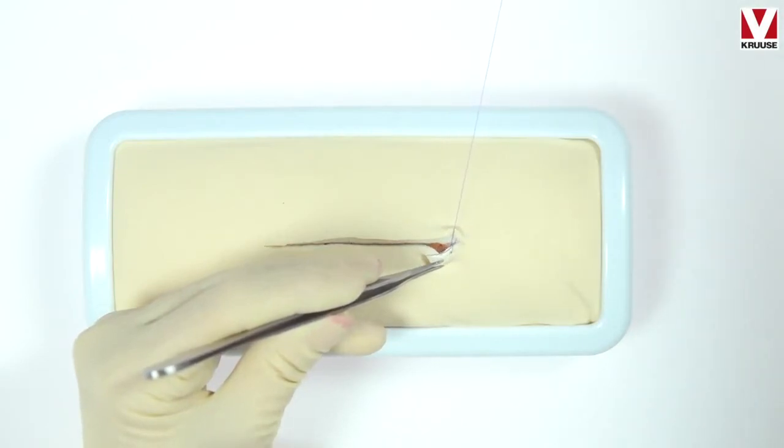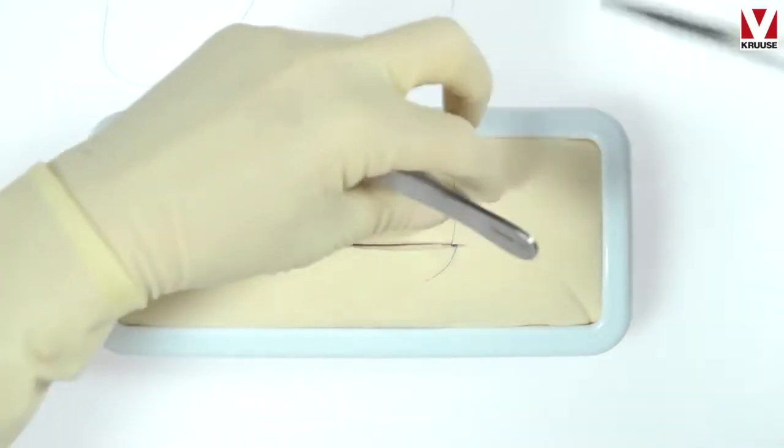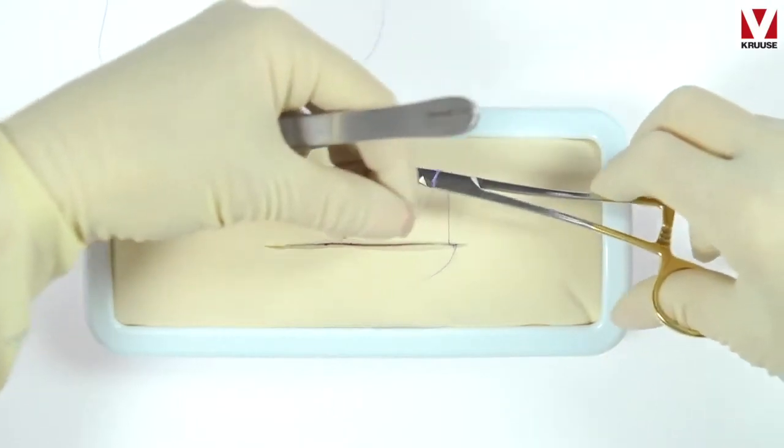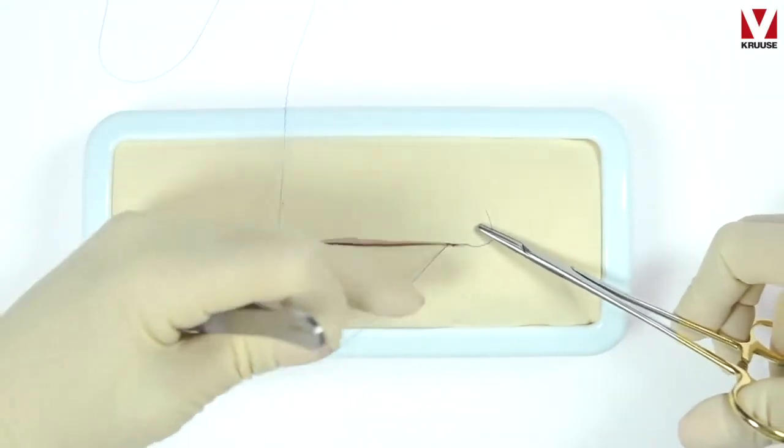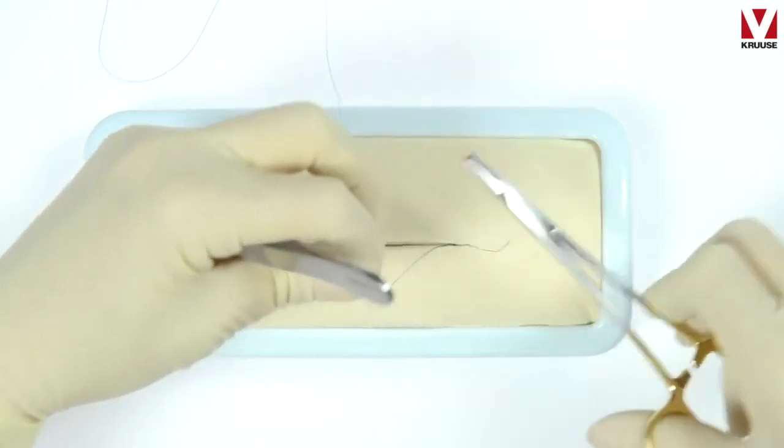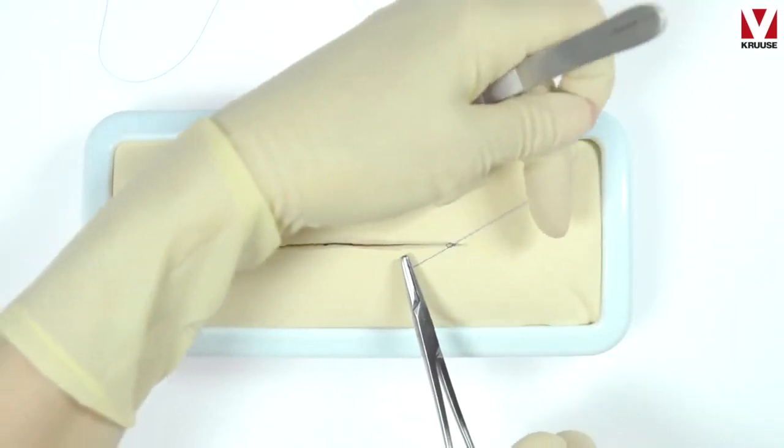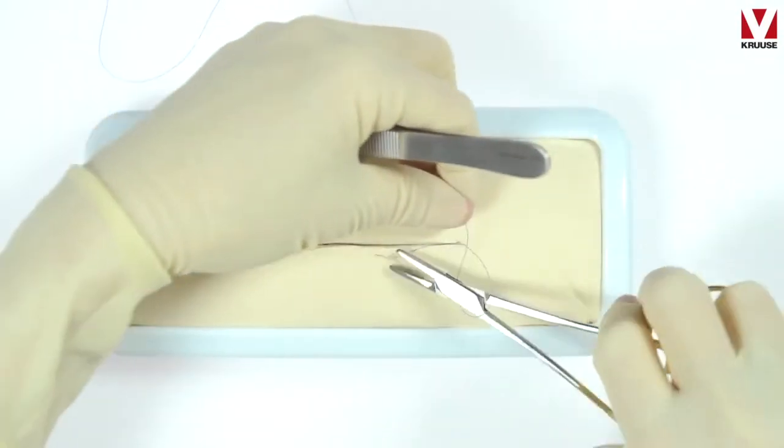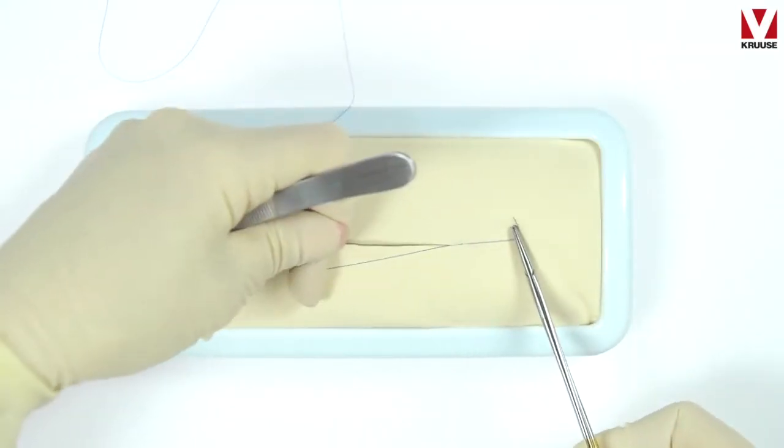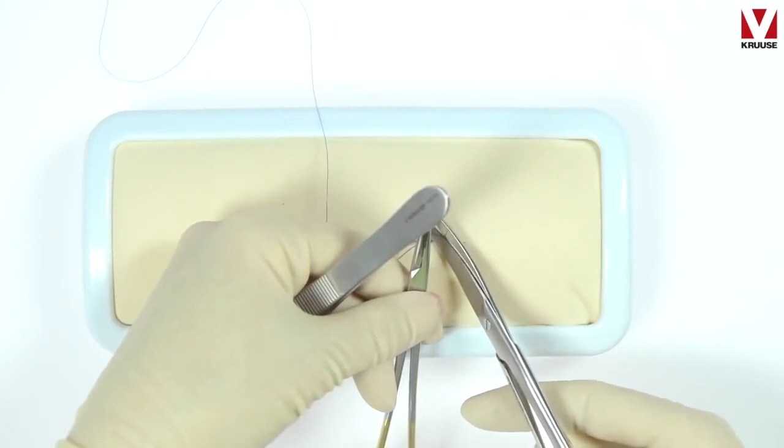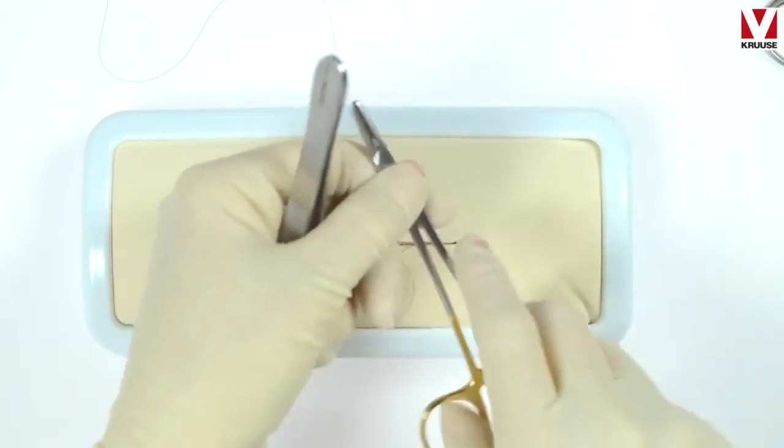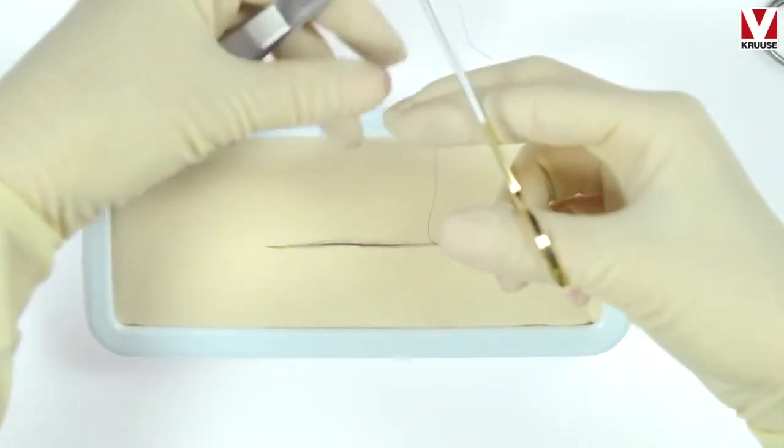Then I am ready to bury the knot. So you make a surgeon's knot, 2-1-1 or 2-1-1-1 if you like that. And then you cut the suture end close to the knot but not so close that it will slip.